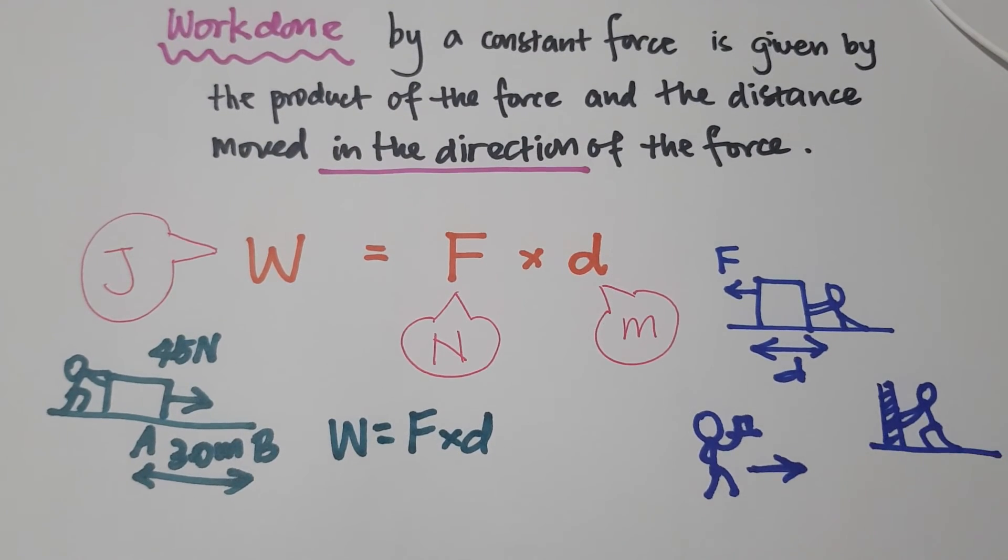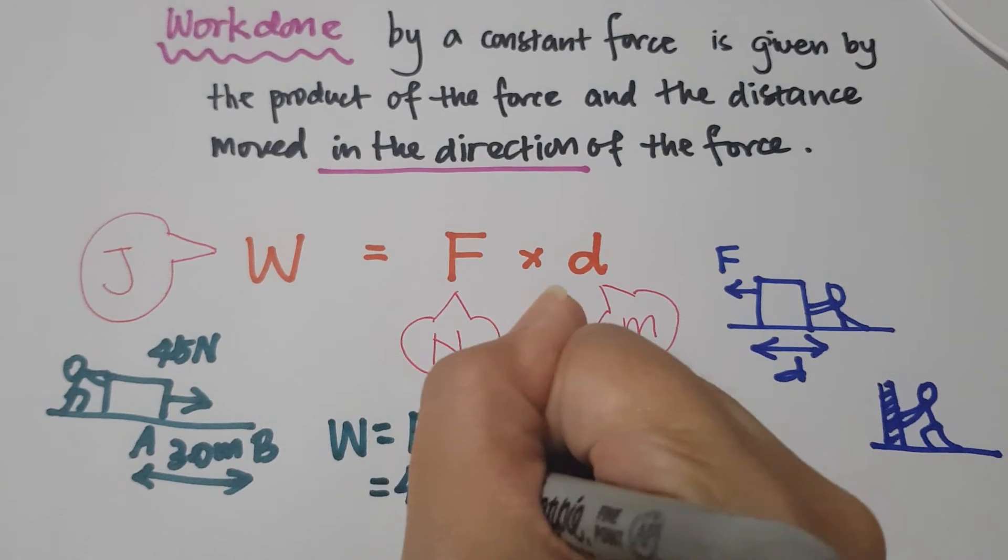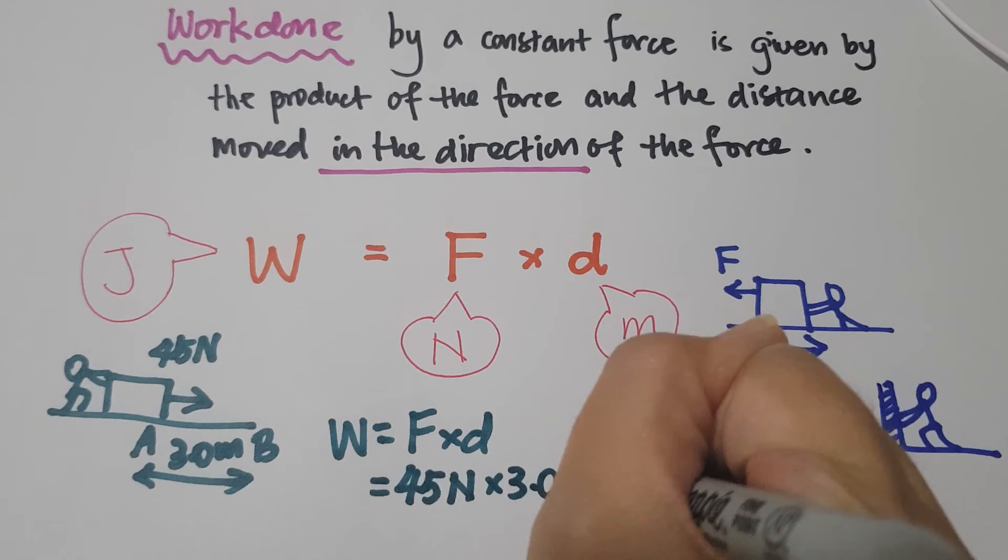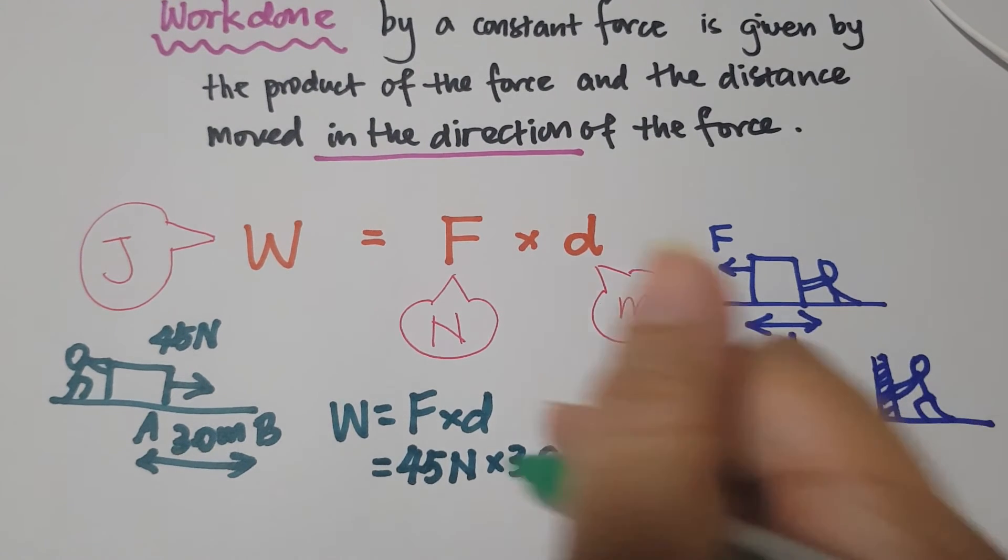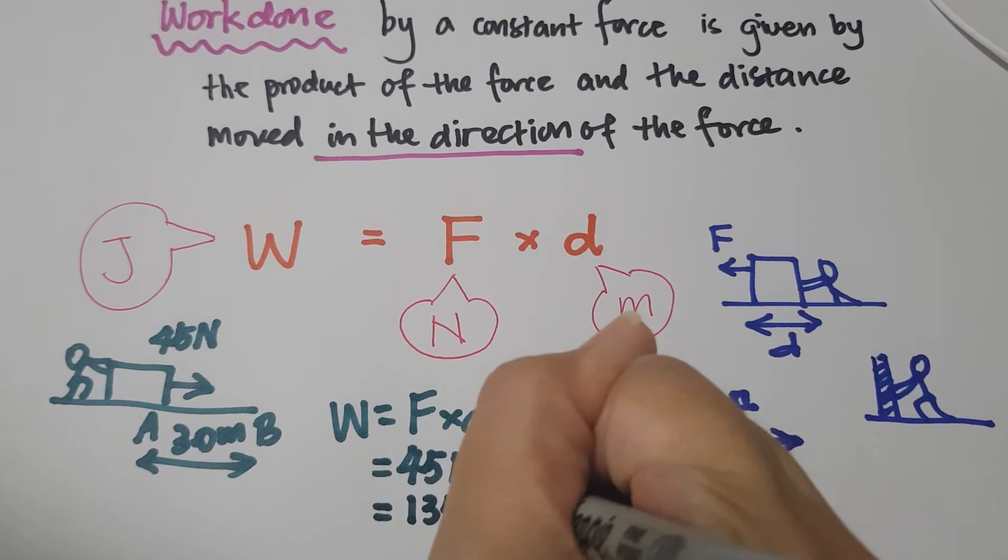What is the work done here? The work done here is force times distance moved in the direction of the force and it is 45 N times 3 meters. So what's the answer? It is 135 joules.